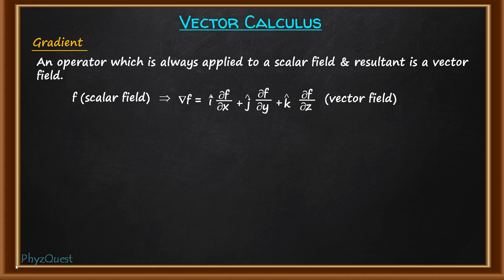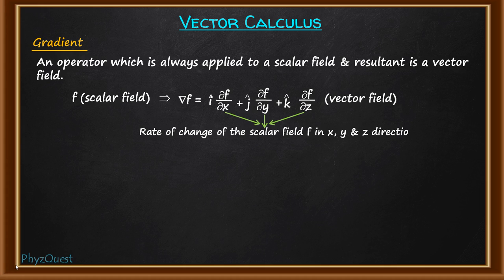The components of gradient — that is ∂f/∂x, ∂f/∂y, and ∂f/∂z — represent the rate of change of the scalar field f in the x, y, and z directions. This is an important term: rate of change. Now, how do we physically interpret this gradient concept?